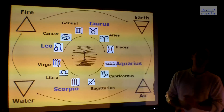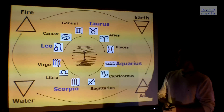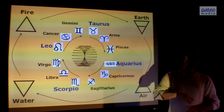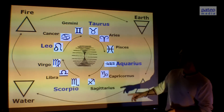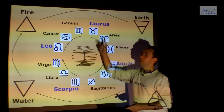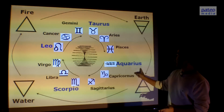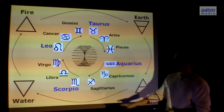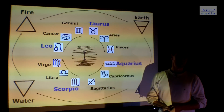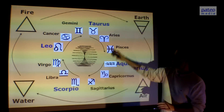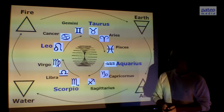Here we see those 12 constellations — those Aeons — again. We see that the order of Earth, air, water, and fire is exactly right. This period starts with the sign of Taurus, which is an Earth sign. Aquarius is an air sign. Scorpio is a water sign. And Leo is a fire sign. So again, the sequence of the four energies is absolutely right.